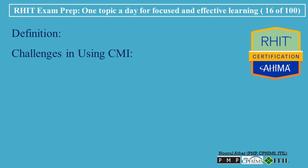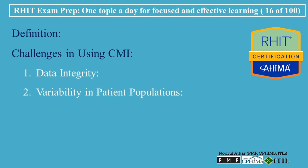Challenges in using CMI. 1. Data Integrity: Accurate CMI calculations rely on precise coding and documentation. Inaccurate coding can lead to incorrect CMI values, impacting financial and operational decisions. 2. Variability in patient populations: Differences in patient demographics, such as age, socioeconomic status, and underlying health conditions, can affect CMI. Organizations must consider these factors when interpreting CMI data.